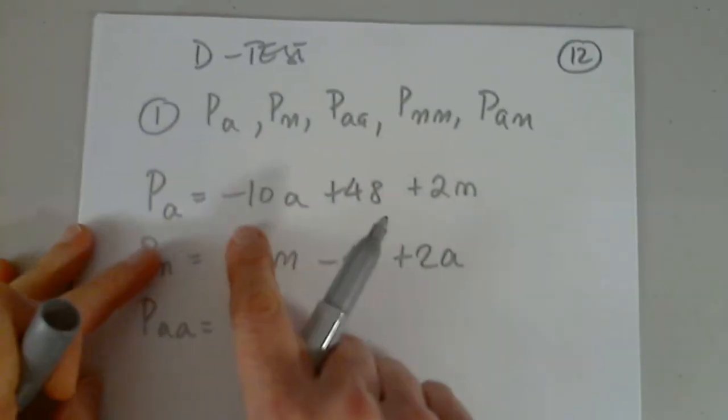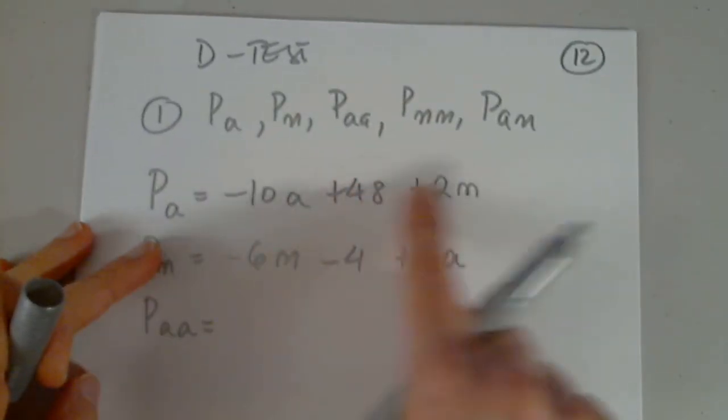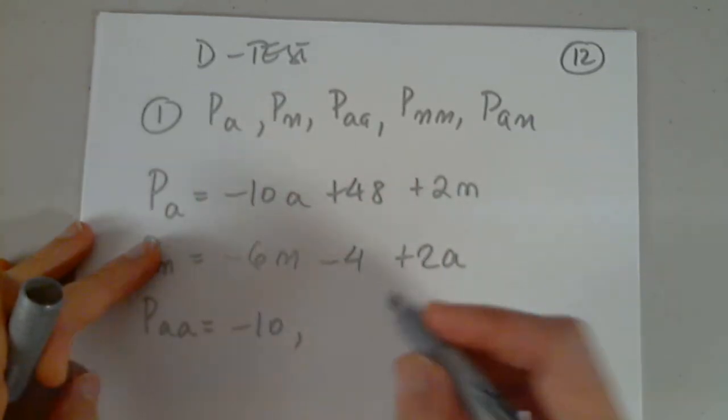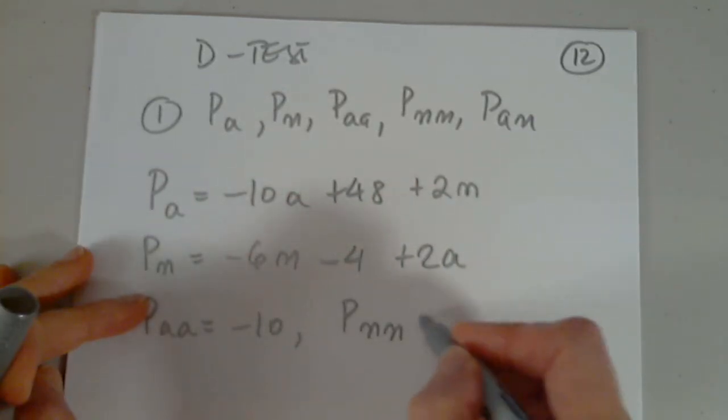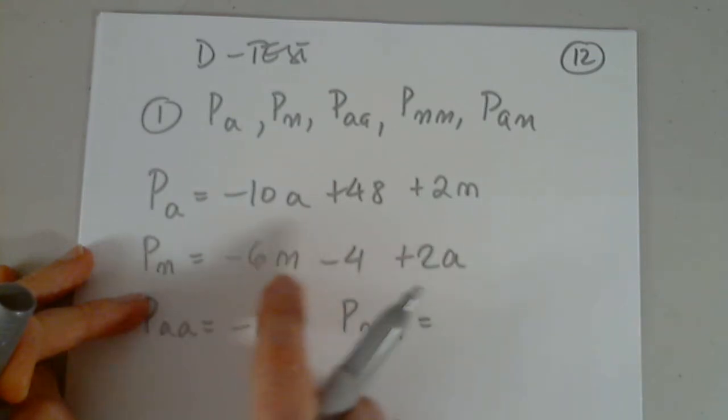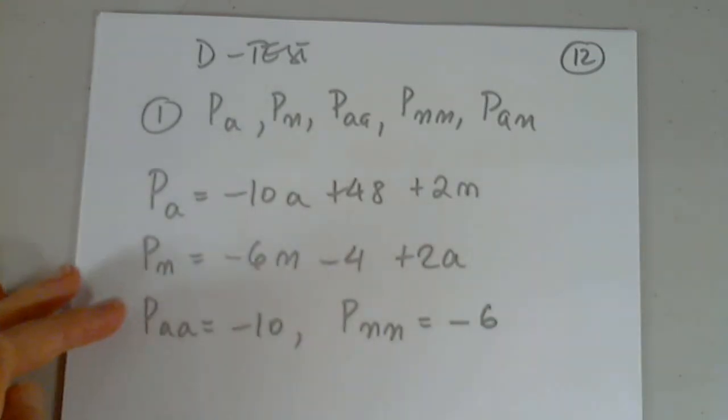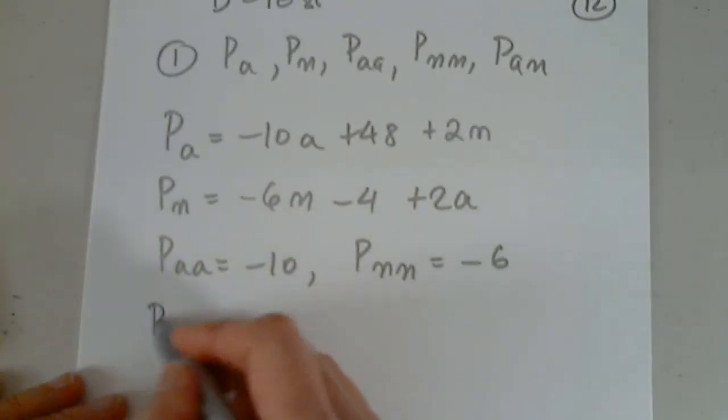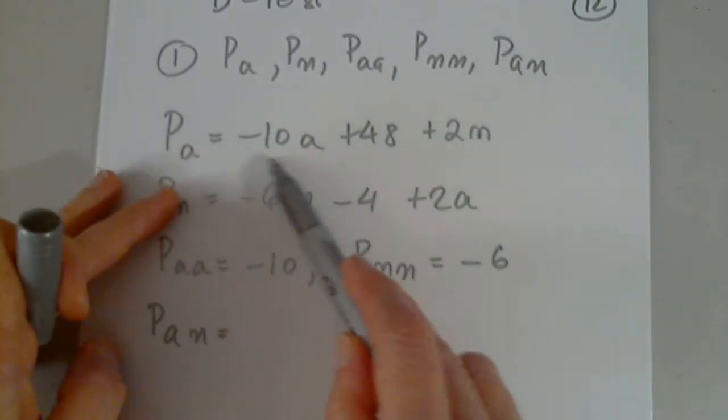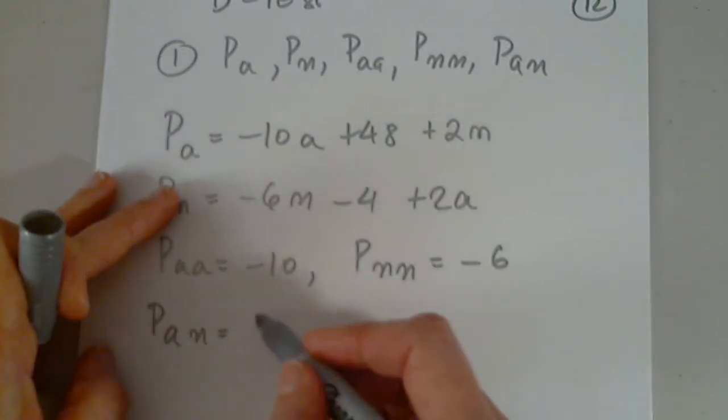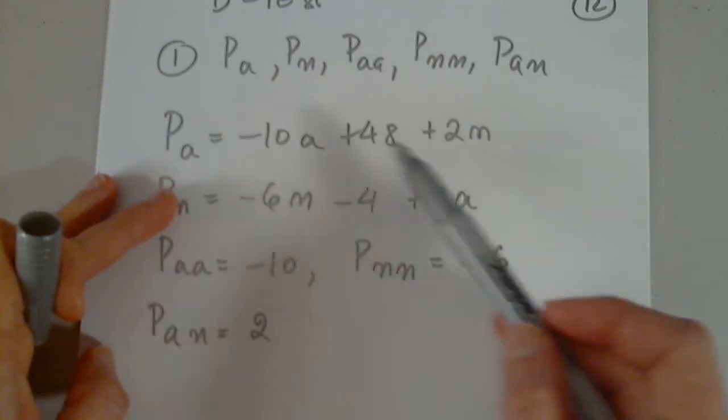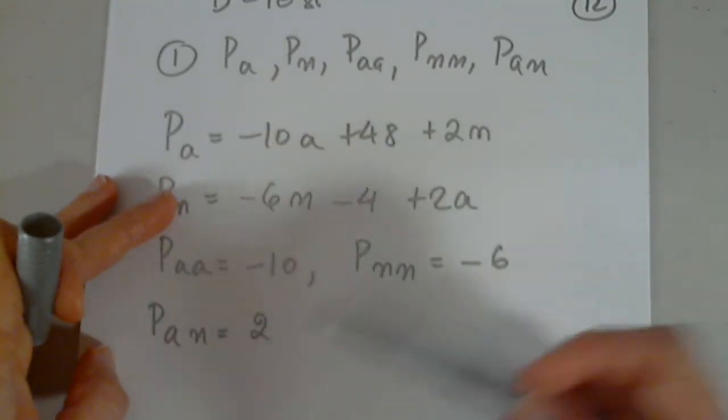Now Paa. I differentiate this with respect to a again. Gone. Negative 10. I differentiate this again with respect to n. Negative 6. And finally Pan. I differentiate this with respect to n. And I get 2. This is gone. This is gone. With respect to n. It's 2.